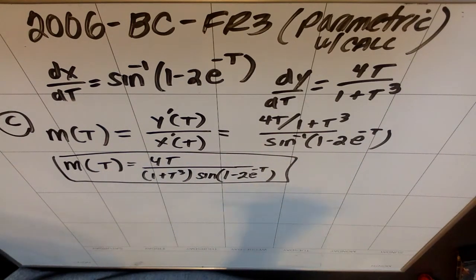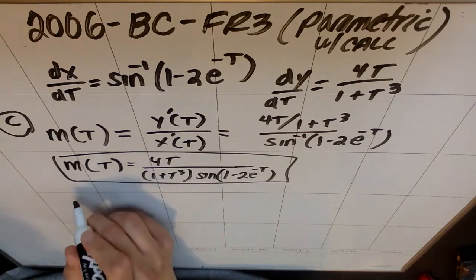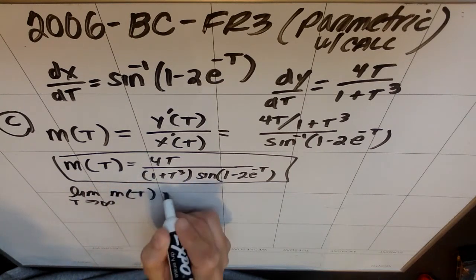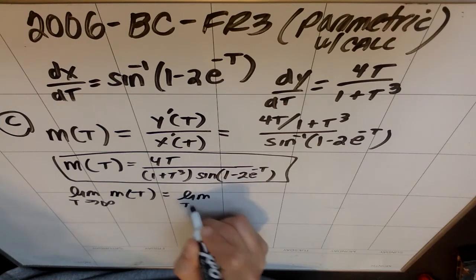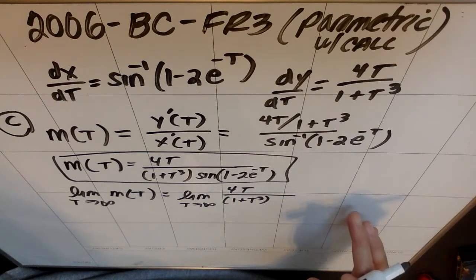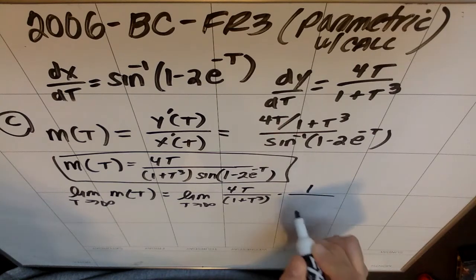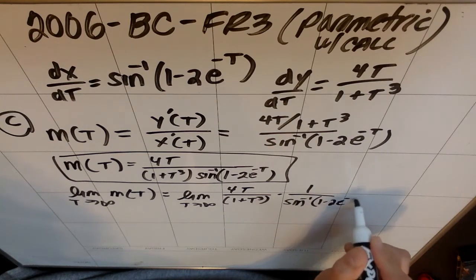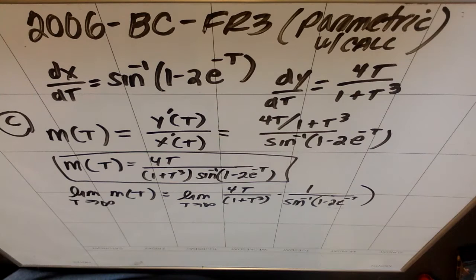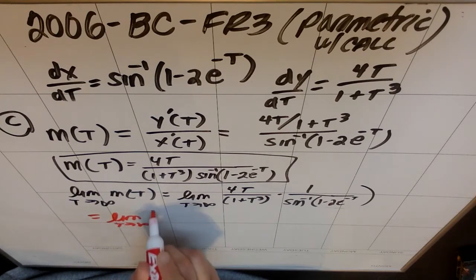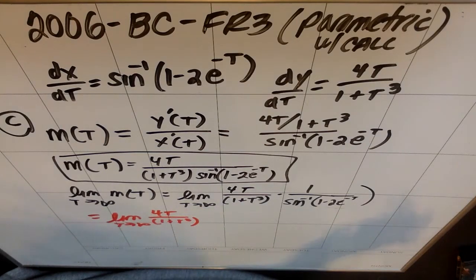The second part of the question is what happens as this thing approaches infinity? So the limit as t approaches infinity of m(t), or if you want to look at it this way, the limit as t approaches infinity of 4t over 1 plus t cubed, I'm actually going to leave this as a separate fraction because it's easier to consider them. So if we look at these individually, let's look at the limit as t approaches infinity of 4t over 1 plus t cubed.